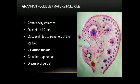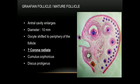In the Graafian follicle, the antral cavity enlarges further and the total diameter increases to around 10 millimeters. The oocyte shifts toward the periphery of the follicle. The cells immediately adjacent to the zona pellucida are called the corona radiata. The surrounding granulosa cells are divided into the cumulus oophorus — cells surrounding the oocyte outside the corona radiata — and the discus proligerus, which connects the oocyte to the wall of the follicle.